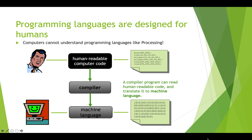We've talked already about programming languages and the fact that they're really designed for people. They use words that are human understandable. They really are much better than what was available before, which was machine language — basically just binary zeros and ones, which is not human readable at all. So we like to work in programming languages because they're human readable, but machines can't understand them, so we need a compiler which takes our program written in a programming language like processing and turns it into the ones and zeros of machine language that the computer can understand and use.